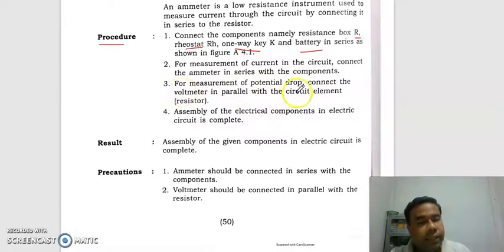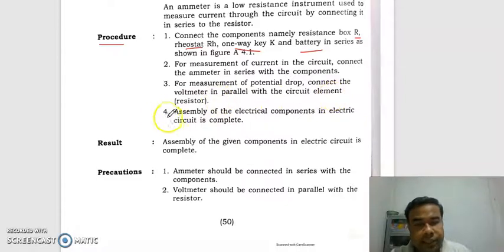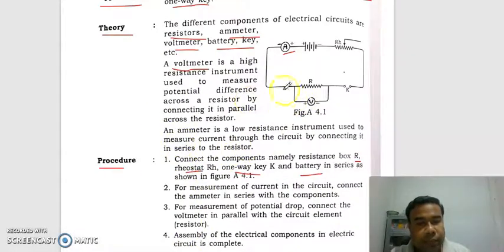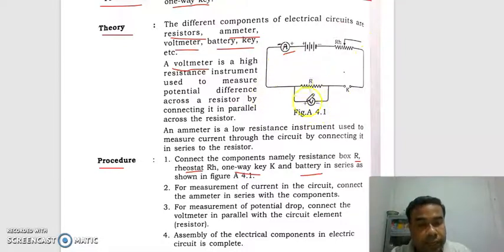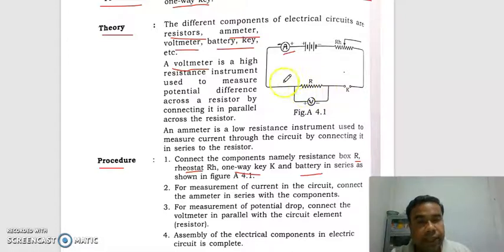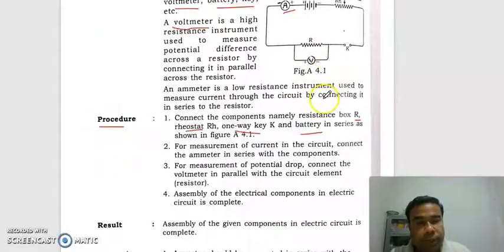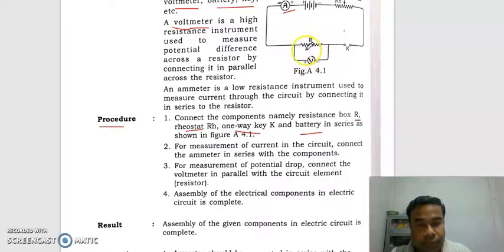For measurement of potential drop, connect the volumeter in parallel with the circuit element resistor. When current flows through the circuit, the potential is dropped across the resistor because the resistor opposes the flow of current. So the potential drop across the resistor is measured by the volumeter, which is connected in parallel to the resistor of resistance R.